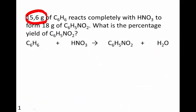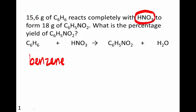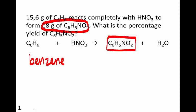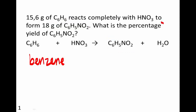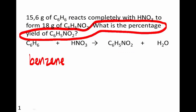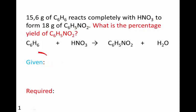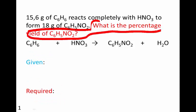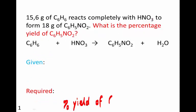15.6 grams of C6H6, which is benzene, reacts completely with nitric acid to form 18 grams of C6H5NO2, which is nitrobenzene. We are asked: what is the percentage yield of this nitrobenzene? So first we have to identify what we're given and what is required — here, the required is very clearly the percentage yield of C6H5NO2.